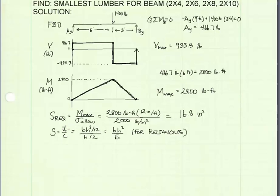For rectangles, it can be written this way, where BH cubed over 12 is the moment of inertia, and C is just half the height. This reduces to BH squared divided by 6. So we can use this to calculate the section modulus for our various shapes.